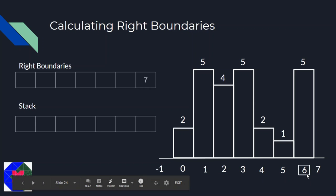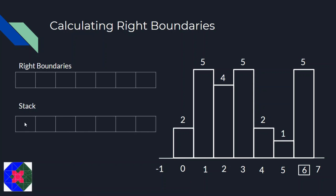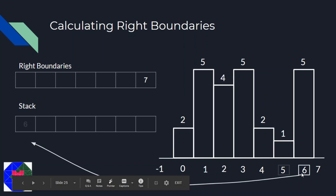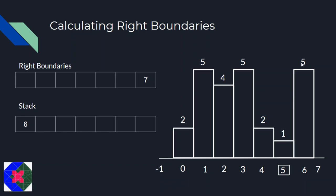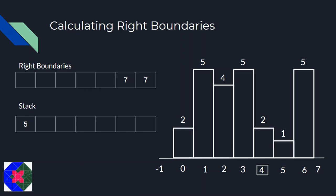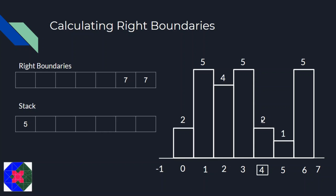Starting from index 6 with height 5: the stack is empty, so we write 7 as the right boundary and push index 6. Moving to index 5 with height 1: we peek and see index 6 corresponds to height 5, which is greater than 1, so we pop. The stack becomes empty, so we write 7 as the right boundary and push index 5. For index 4 with height 2: index 5 on the stack corresponds to height 1, which is lesser than 2, so we write 5 as the right boundary and push index 4.